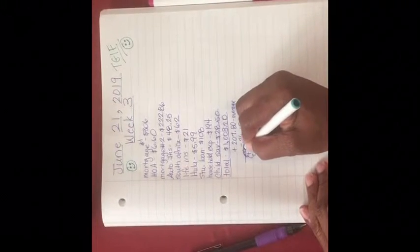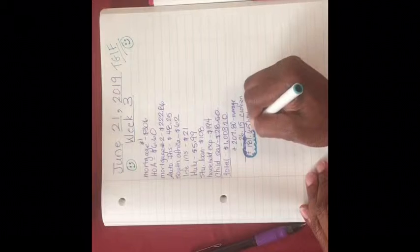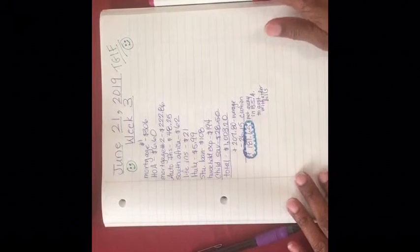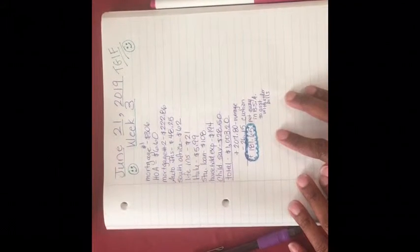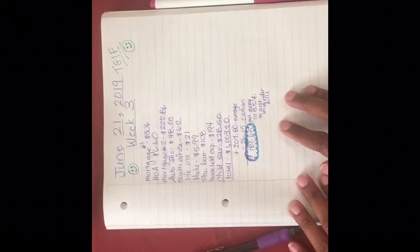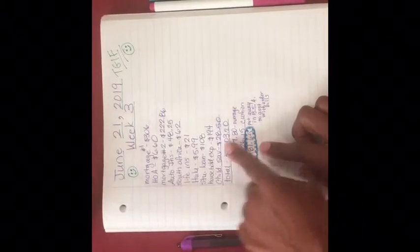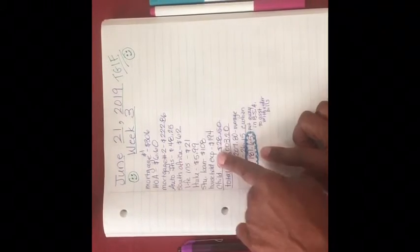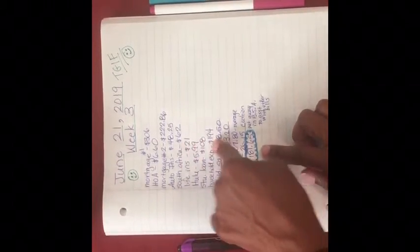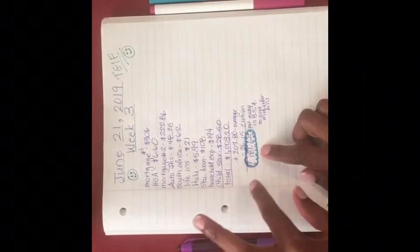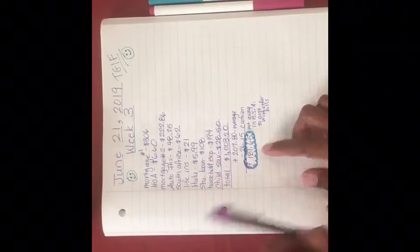So we're going to color code that. You know, I like to add some color so that you can see how the numbers actually relate to each other. Now, once we've done that total, then the next thing, step two, is to go back through my expenses and put a PA beside those expenses or amounts of monies that I will not be satisfying this week.